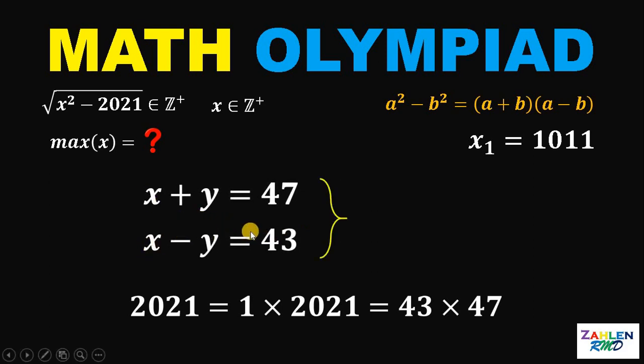We have 2x equals 47 plus 43, which is equivalent to 90. So 2x equals 90. Let's solve for the value of x. Let's divide both sides by 2, and 90 divided by 2 will give us 45.